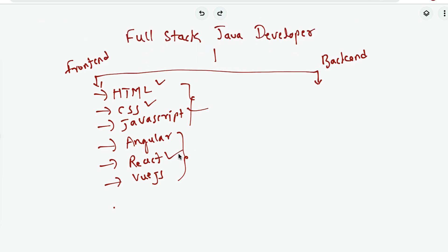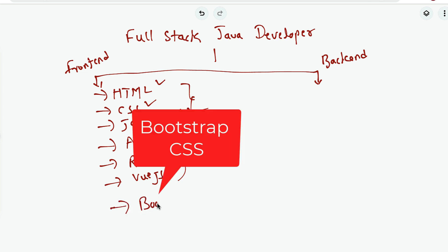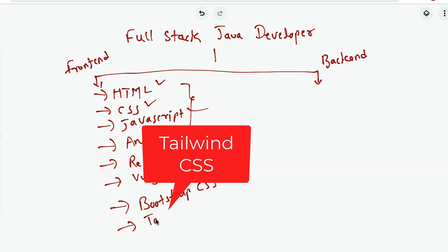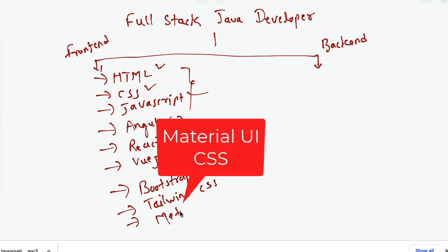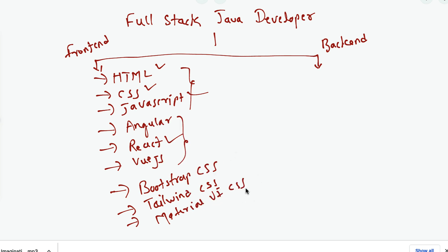Once you learn one of the front end frameworks, next you need to learn a CSS framework or library. There are a few popular ones you can use to style your web application pages, for example Bootstrap CSS framework, Tailwind CSS framework, and Material UI CSS framework. Make sure you learn at least one of these CSS frameworks or libraries.